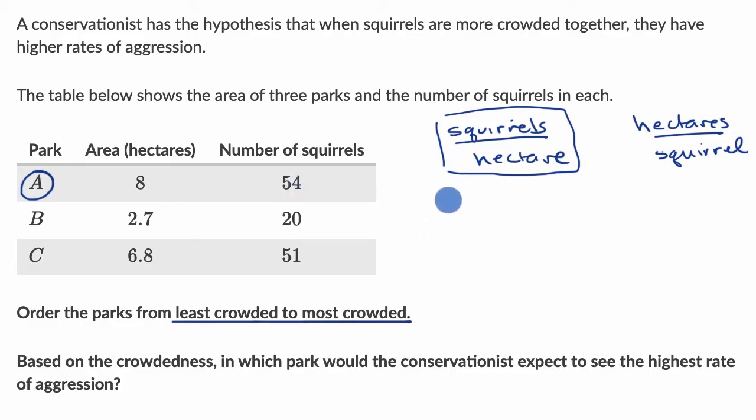Park A: you have 54 squirrels per every 8 hectares. This is the same thing as 54 over 8 squirrels per hectare. They are all actually a little bit around seven if we divide the number of squirrels by the number of hectares, so we might have to get a little bit more precise.